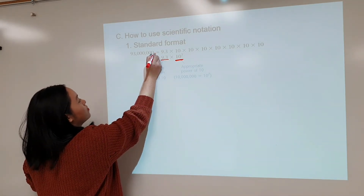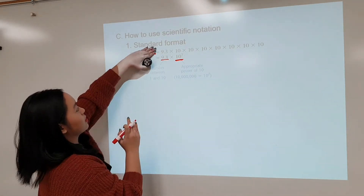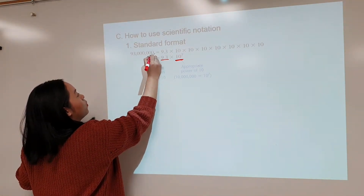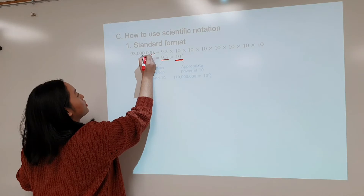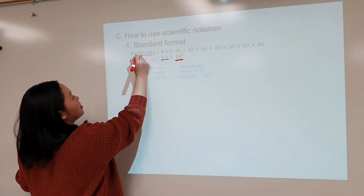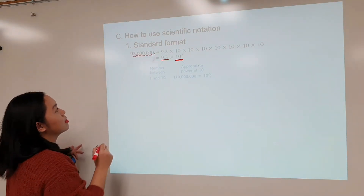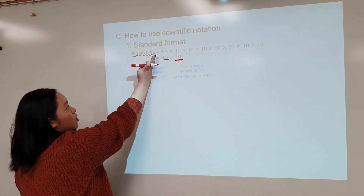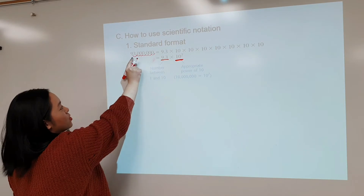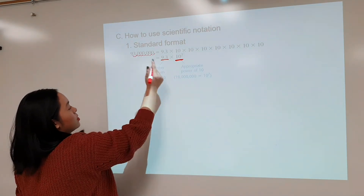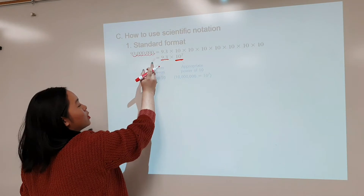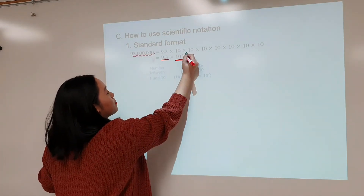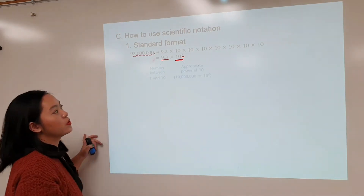This is your invisible decimal — it's not written, so consider it right there. I move this invisible decimal 7 places over, and I reach 9.3. So the number is 9.3, and the number of times I moved the decimal — 7 — that is the power of your power of 10. So 93 million is written as 9.3 times 10 to the 7th.